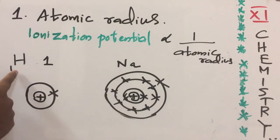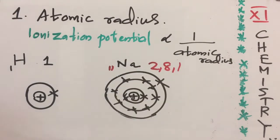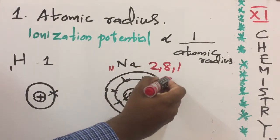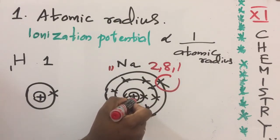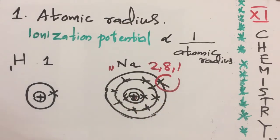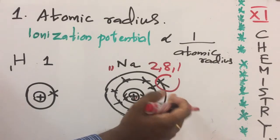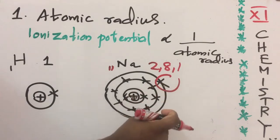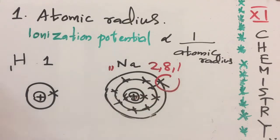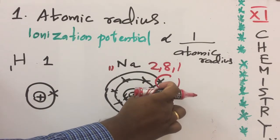Let's take two examples: hydrogen (atomic number 1, configuration 1s¹) and sodium (atomic number 11, configuration 2,8,1). Out of hydrogen and sodium, the atomic size of sodium is bigger. So the outer electron is far from the nucleus, and the force of attraction between the outer electron and nucleus is less. Due to this less force of attraction, removal of the valence electron is easy, so ionization energy becomes less. Higher the atomic size, the lower the ionization potential.